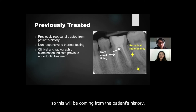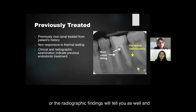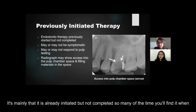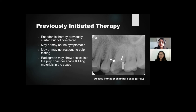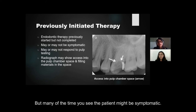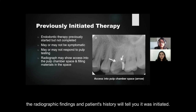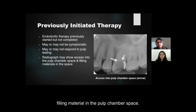A previously treated tooth refers mainly to a tooth that has already been root canal treated, which comes from the patient's history and radiographic findings. You would not expect the tooth to respond to thermal tests. Previously initiated therapy is slightly different — the root canal was started but not completed. This often occurs when a tooth became symptomatic and was opened up at an emergency appointment. The tooth may be symptomatic or asymptomatic, but patient history and radiographic findings — such as filling material visible in the pulp chamber space — confirm the diagnosis.